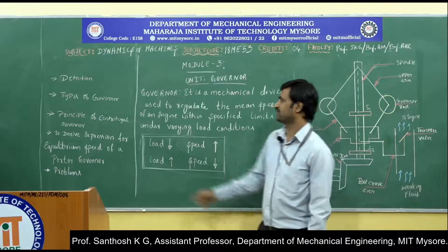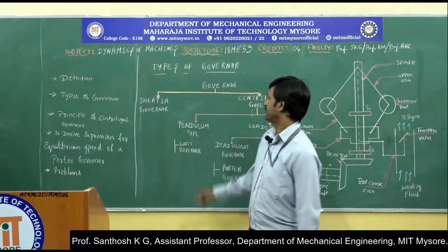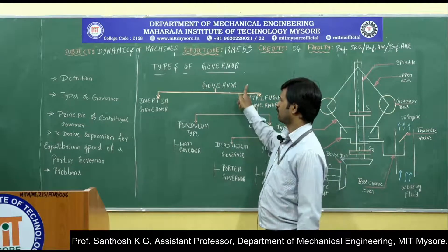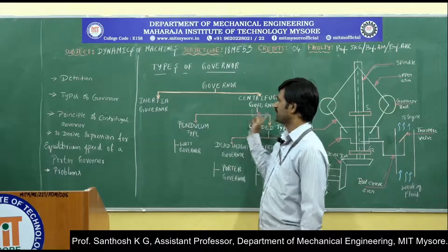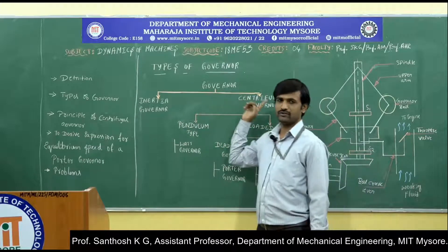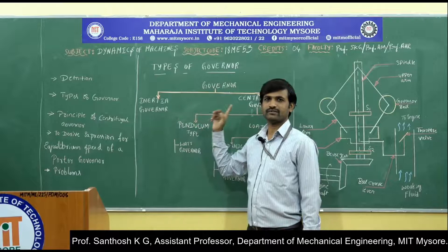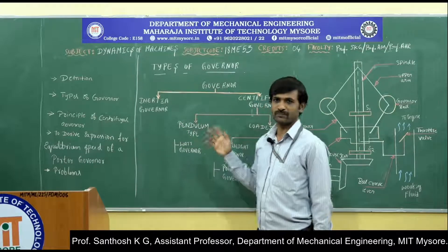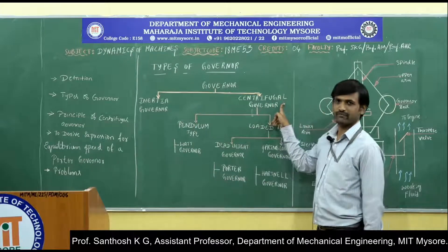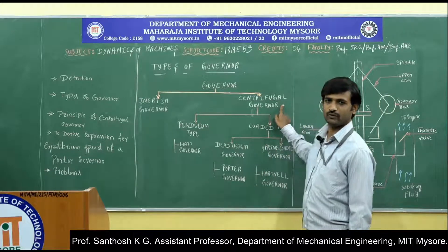Next, we will see the types of governors. Based on the principle of working, governors are mainly classified into two types: one is called an inertia governor and the second one is called a centrifugal governor. If the governor regulates speed by making use of inertia forces, it is called an inertia governor. If it makes use of centrifugal force to regulate speed, then it is called a centrifugal governor.